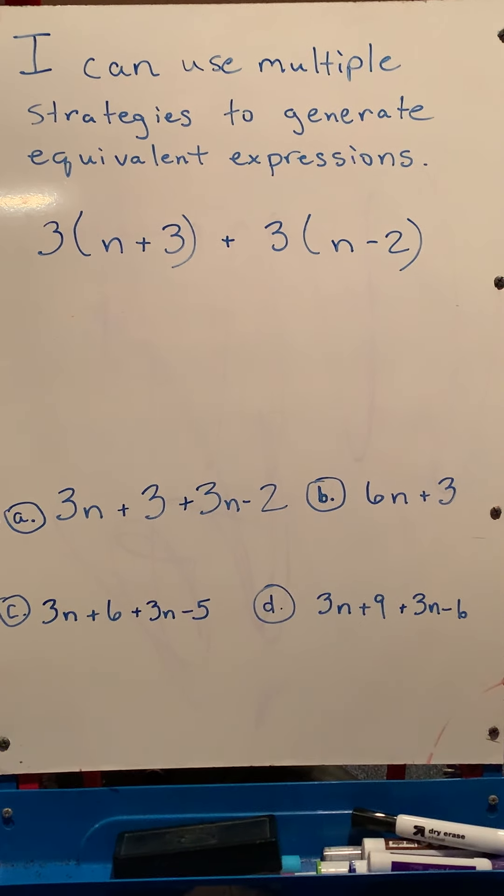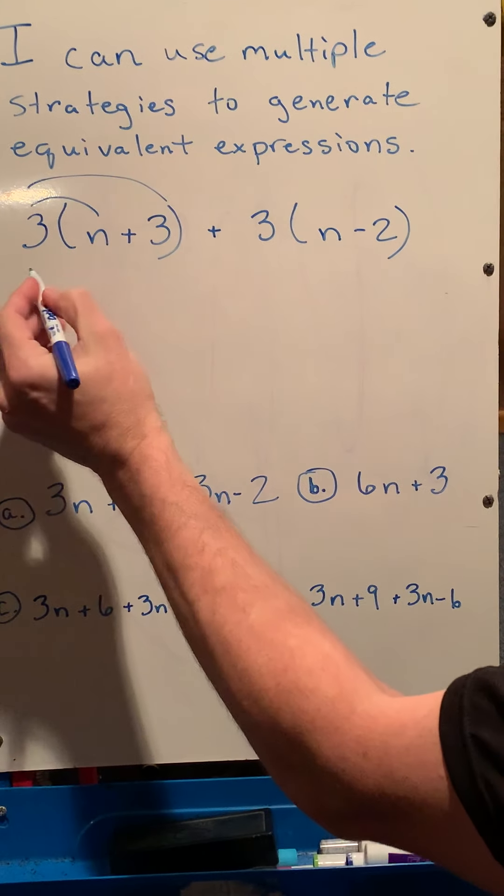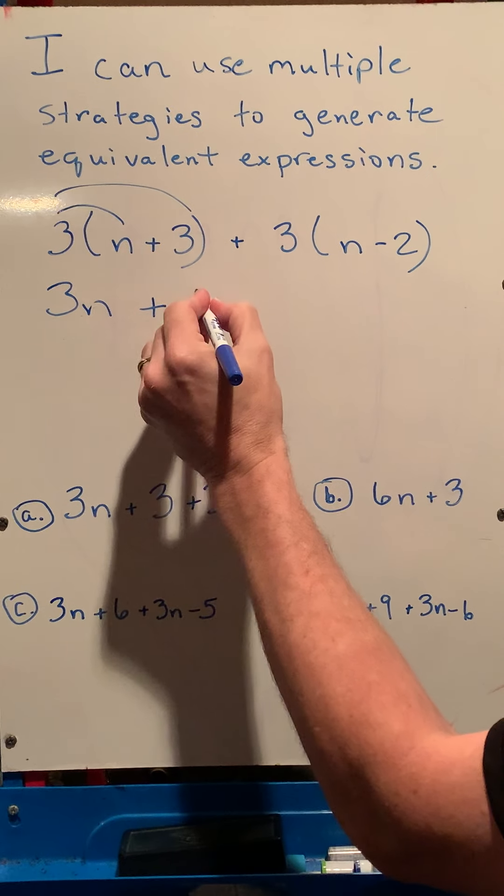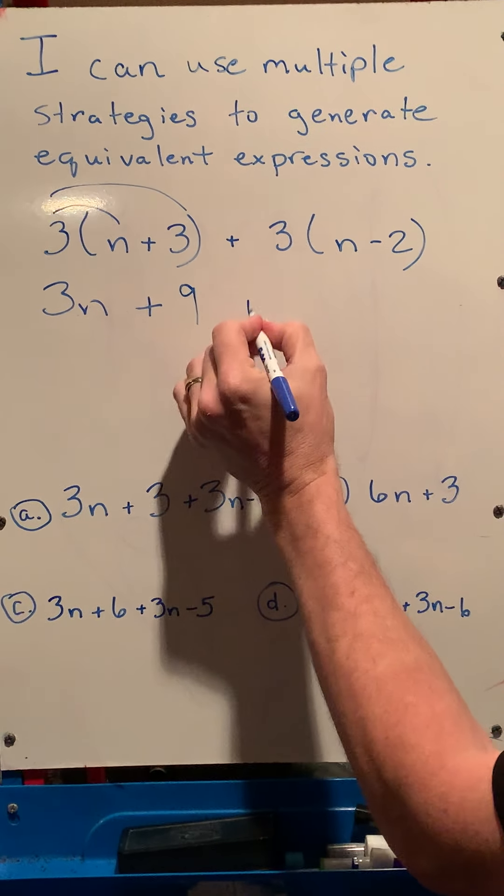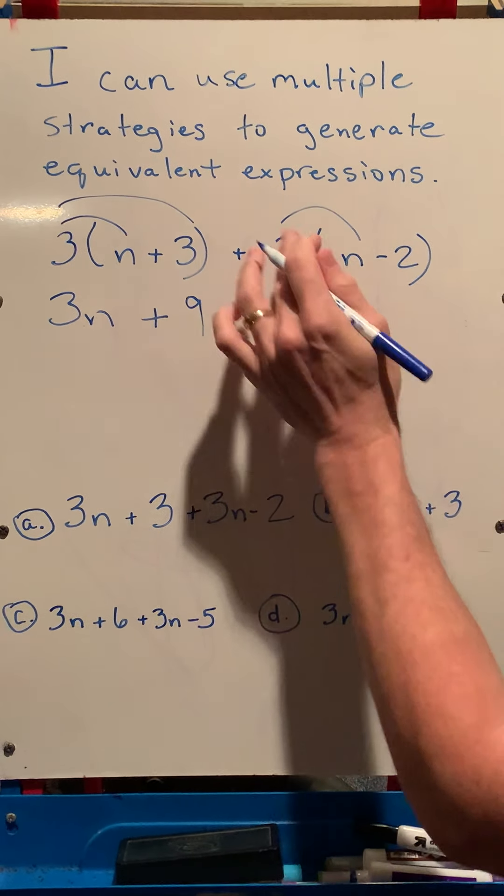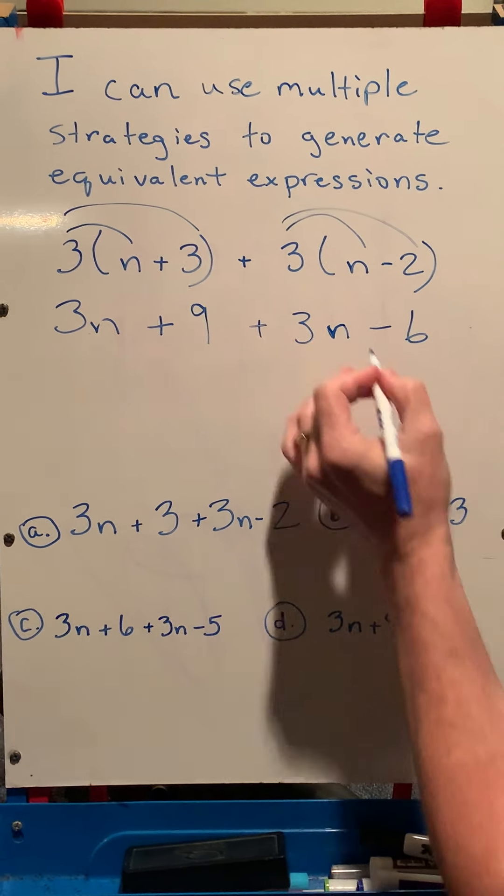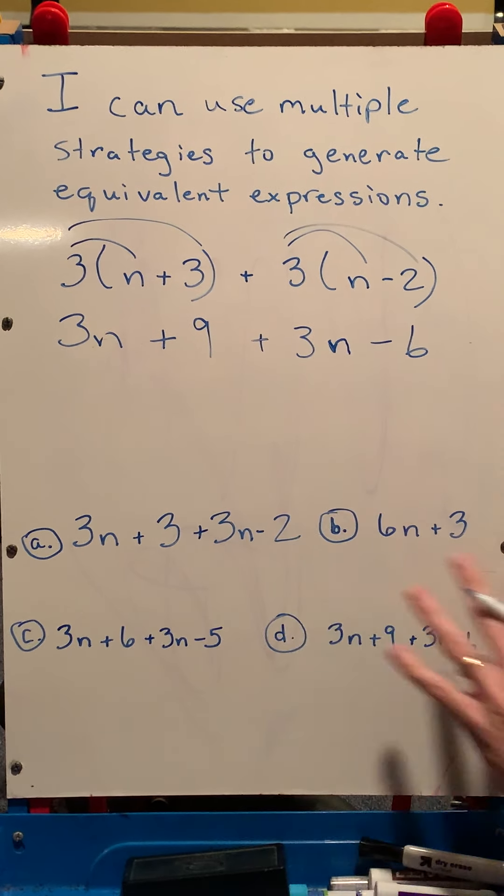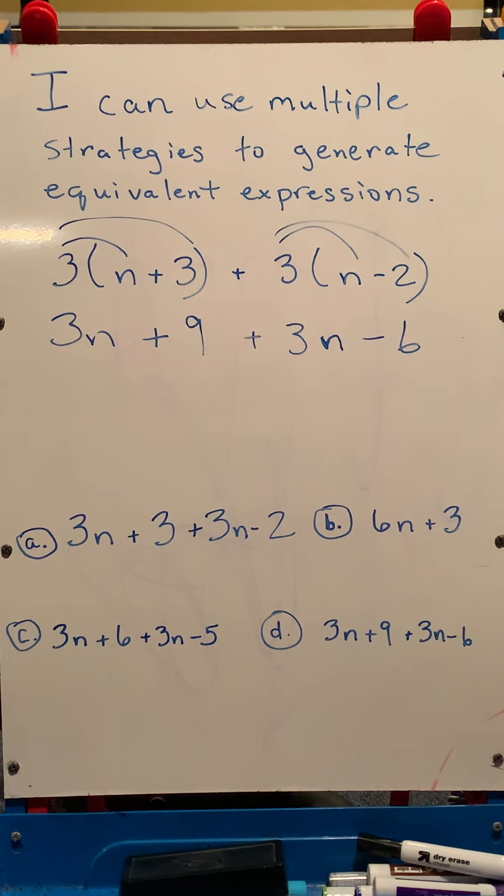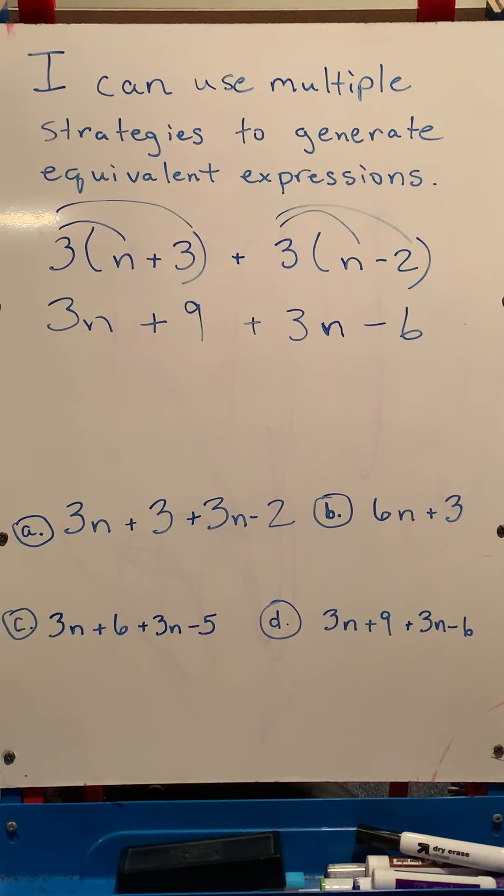So we're going to take three times the quantity of n plus three here. So let's distribute three times n is 3n plus three times 3 is 9 plus three times n is 3n minus three times 2 is 6. Before moving on here, we've got lots of choices. And if you look at some of these expressions down here, they have not combined like terms yet. So I'm going to take a look to see if any of these match up with this.